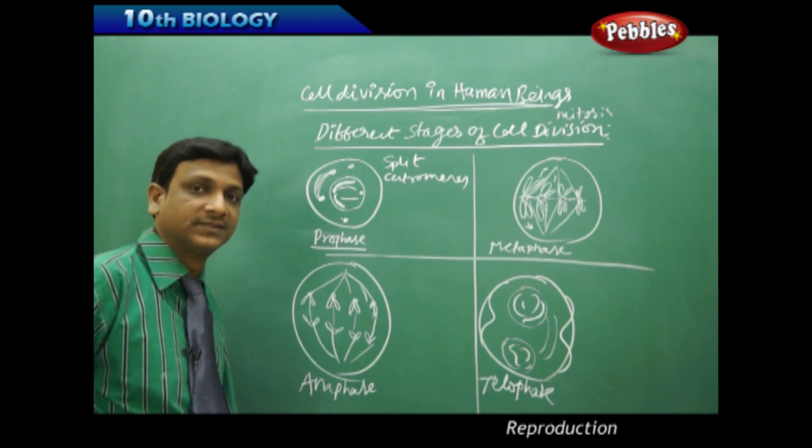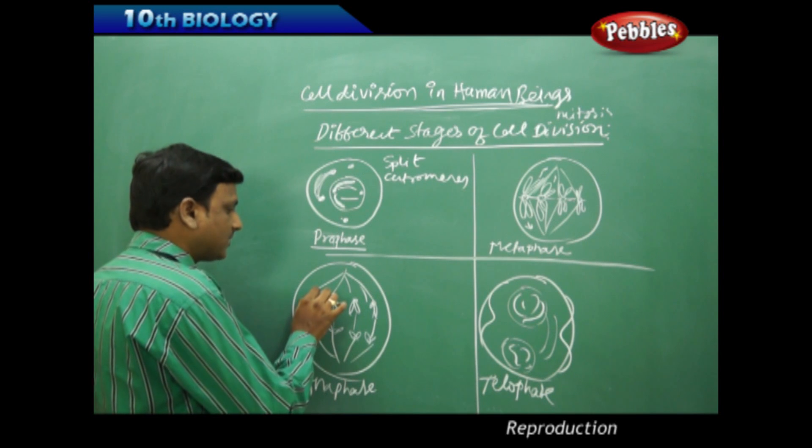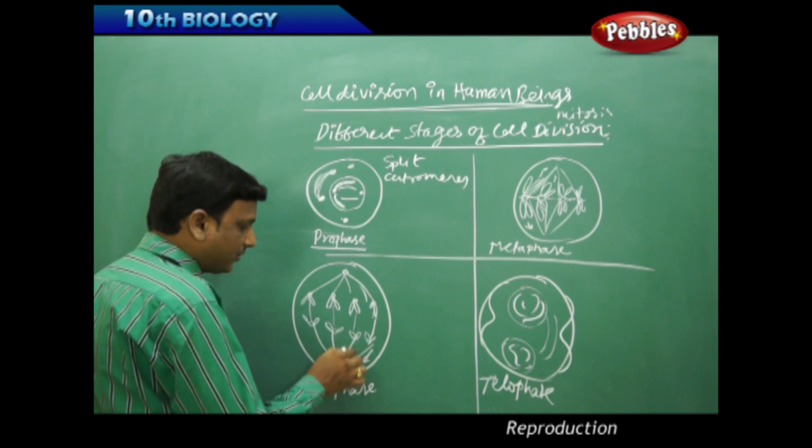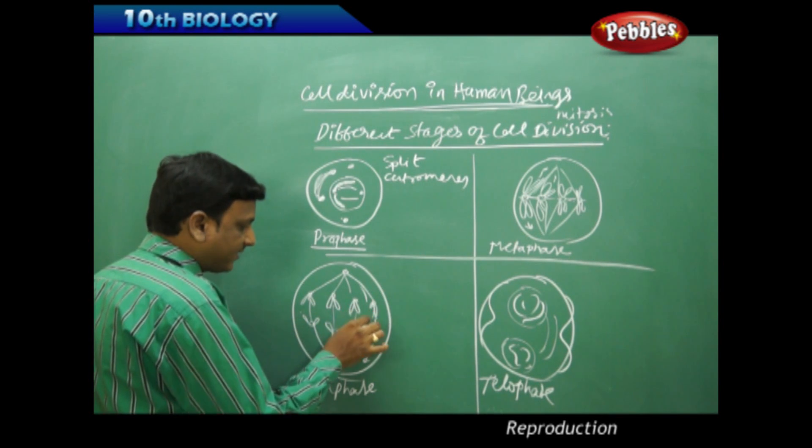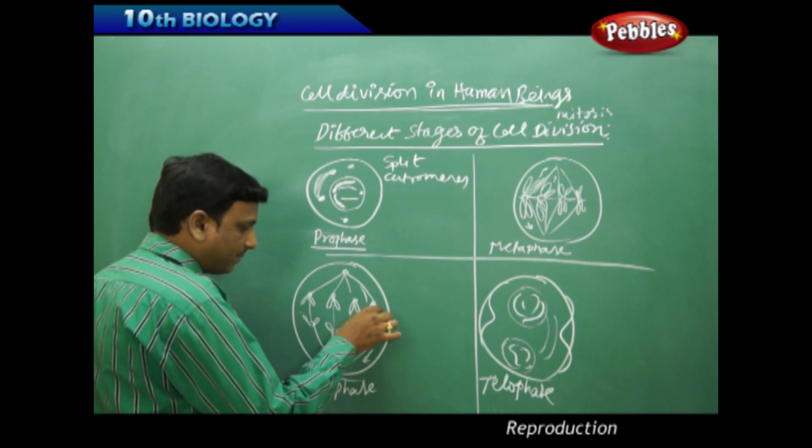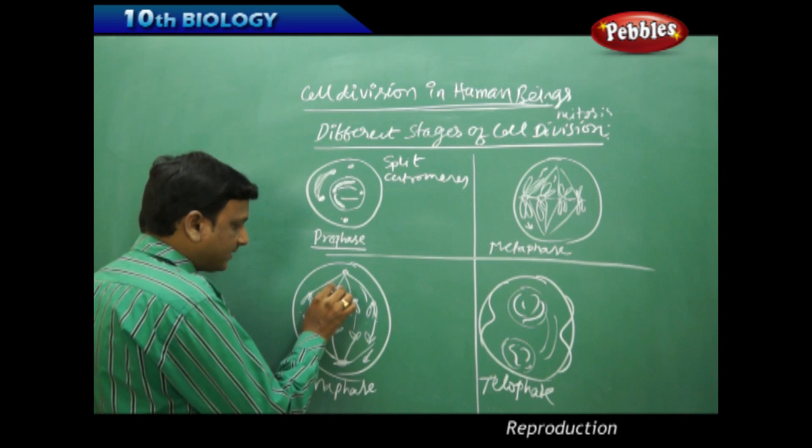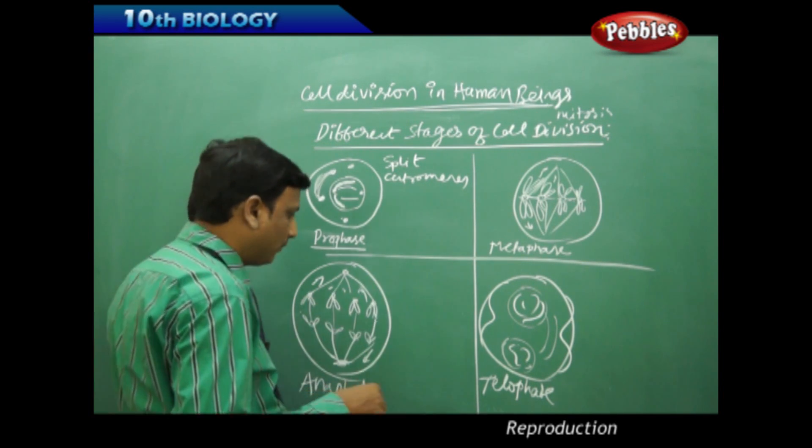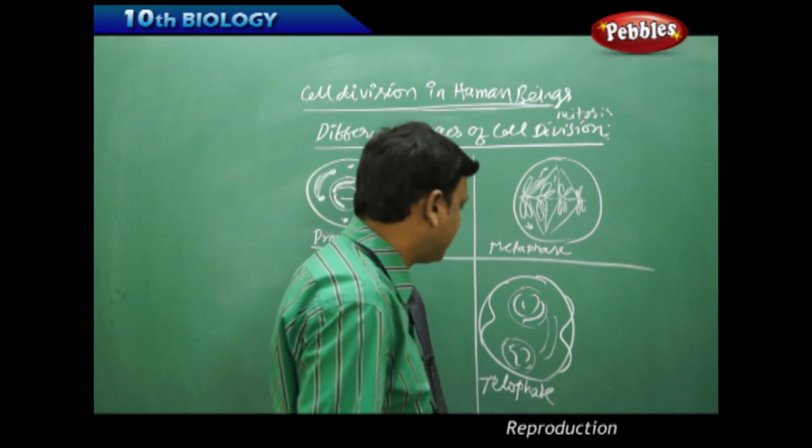In anaphase, we observe these chromosomes are being pulled towards the poles. You can clearly see that they are divided right now—one pair here, the other pair there. In this way, the chromatids, these chromosomes, are moving towards the poles.